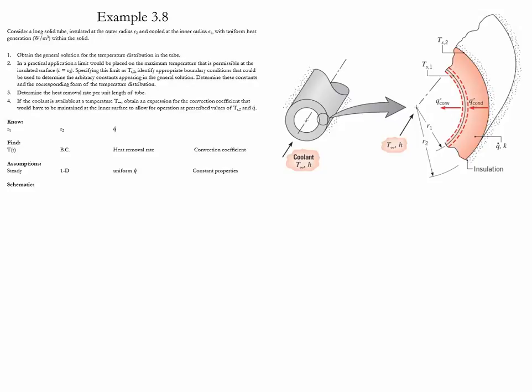The tasks that we have to complete are the following. First, we have to find out the temperature distribution within the solid. Second, we have to find the boundary conditions if we set the temperature at the outer surface to be constant as well as having insulation. Third, we calculate the heat removal rate. And fourth, we find out the convection coefficient at the inner surface.